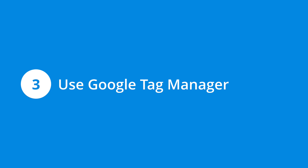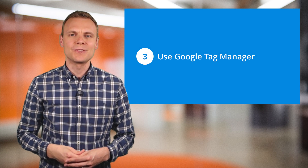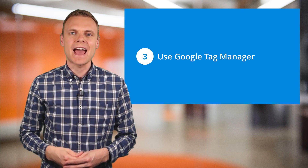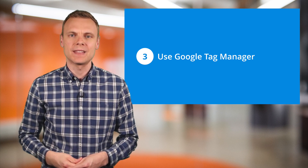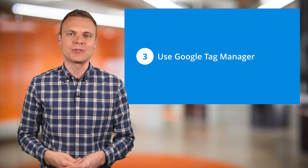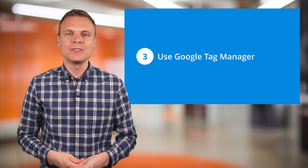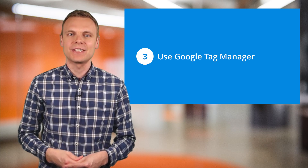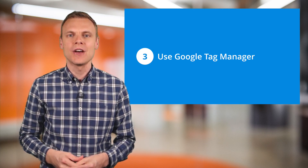Step number three is to use Google Tag Manager. If you're not using Google Tag Manager already, it allows you to add the Google Analytics tag to your website. Then when you have additional requirements or extra things that you want to track, in most cases you can add tracking without having to change the code on your website. For example, if you wanted to track people watching YouTube videos embedded on your website, form submissions, or even people traveling between two different domains.